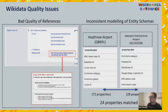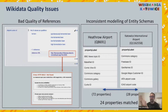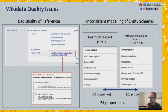More specifically, the team has been looking at these two different issues: bad quality of references, and inconsistent modeling of entity schemas. We have been addressing these two problems with two AI-based assistive tools for helping Wikidata editors manage references and automatically generate entity schemas.